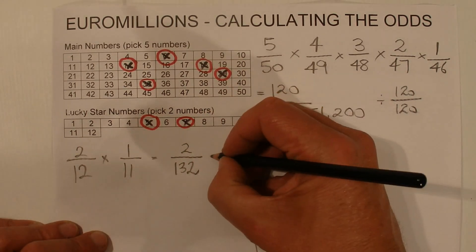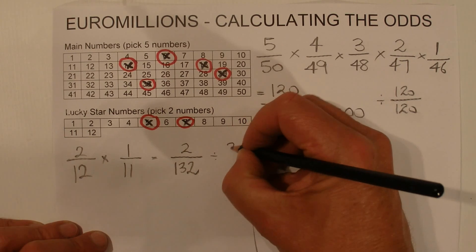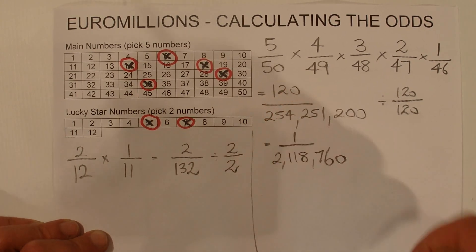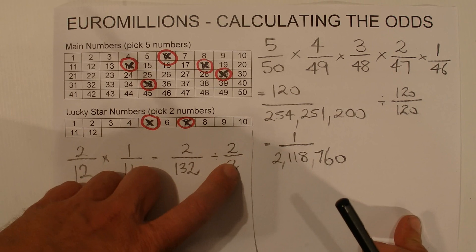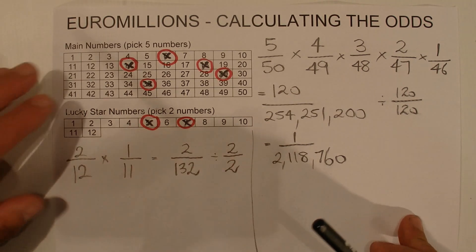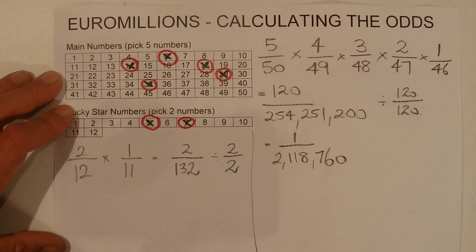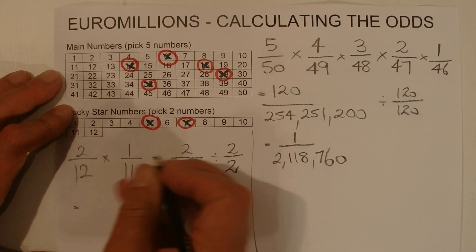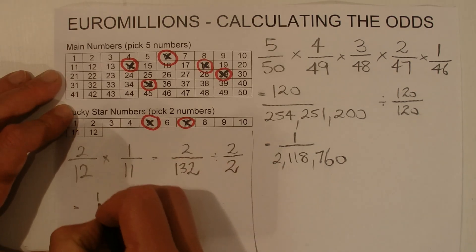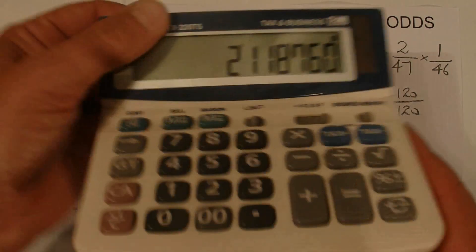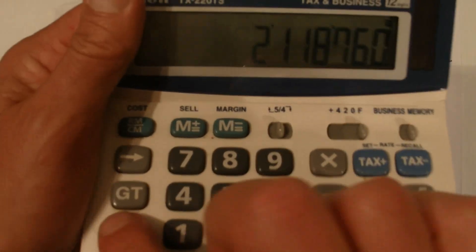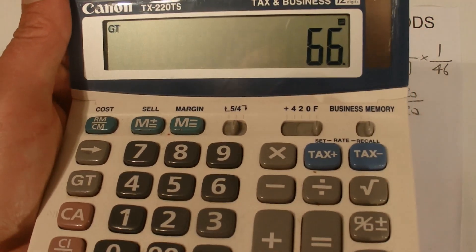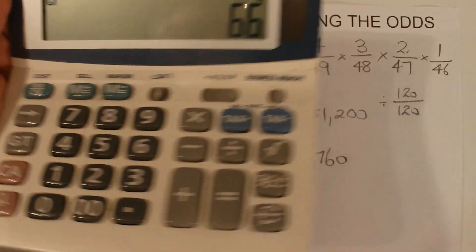We simplify that to express it as one chance in a certain amount. Dividing each side by 2: 2 divided by 2 is 1, and 132 divided by 2 is 66. So the odds for the Lucky Stars are one chance in 66.